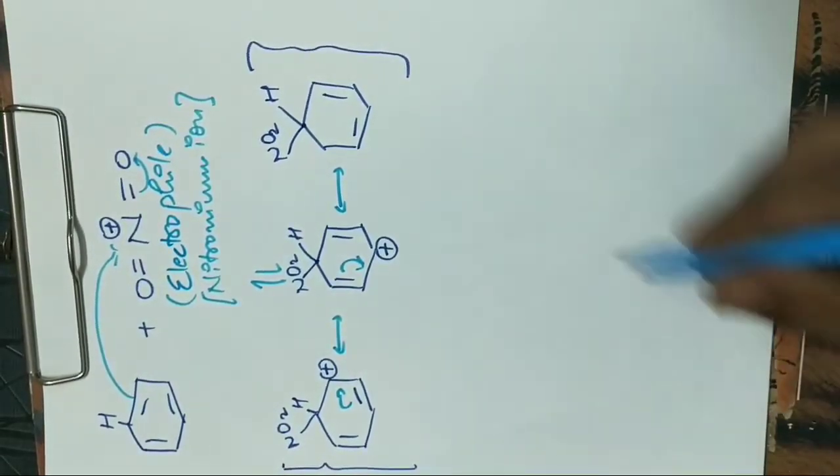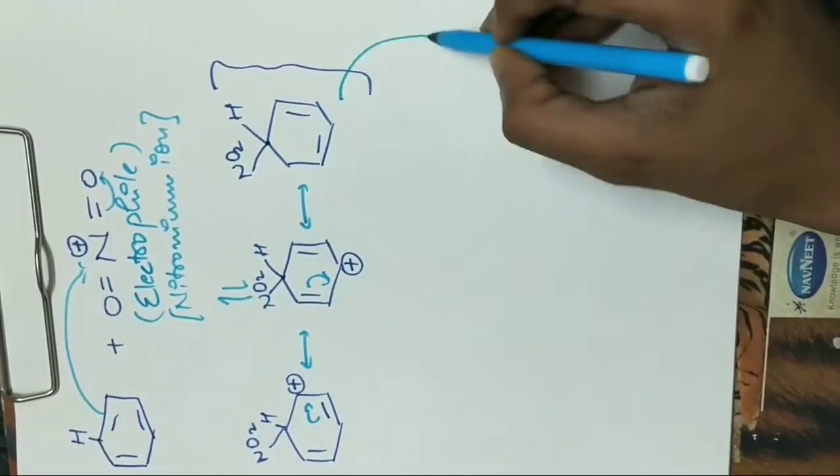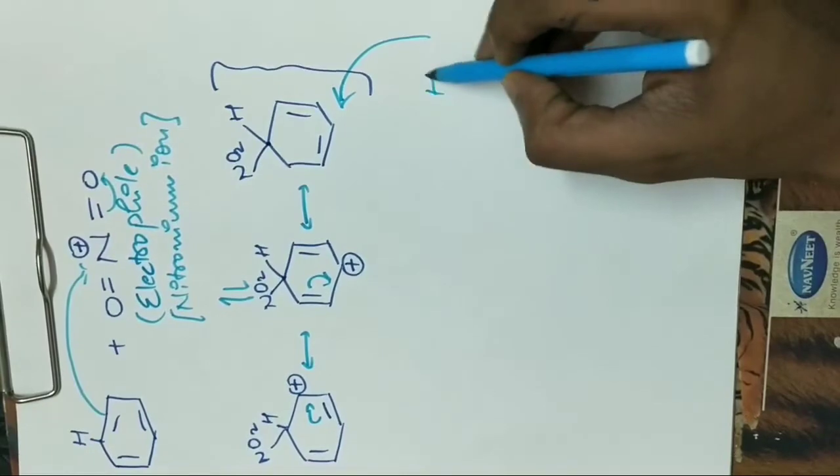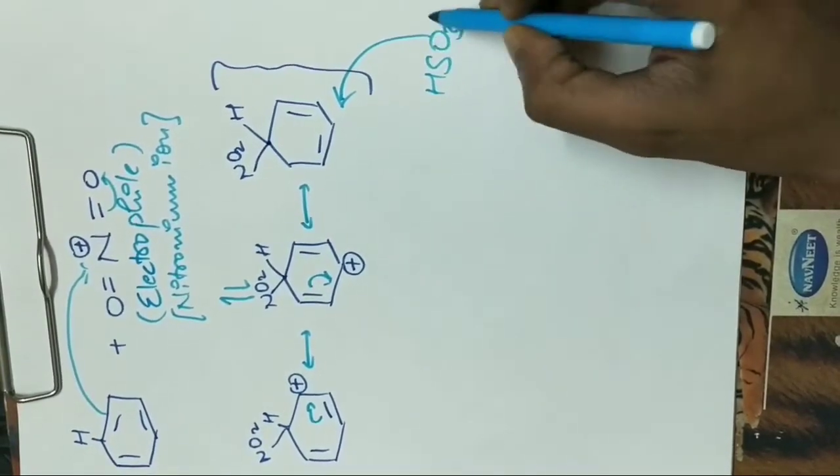And the third resonating structure will be this. The bisulfate anion, HSO4 minus, acts as a base in this reaction.